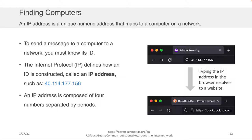We didn't speak about how you would technically figure out that one machine is A and another machine is B — how do you know who's who in that network so that you can actually send the message to the right address? Well, in order to do this, you have to generate a unique ID for each of the machines.